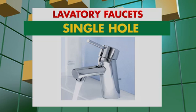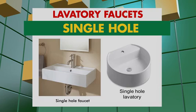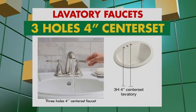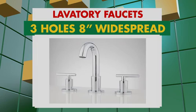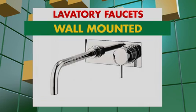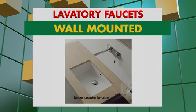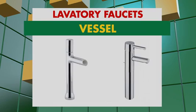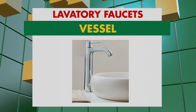Ang single-hole faucets ay ginagamit sa labatory na may isang butas o sa single-hole laboratory. Ang 3-hole 4-inch center set faucets ay ginagamit naman sa labatory na may 3 magkakadikit na butas. Ang 3-hole 8-inch wide-spread faucets ay ginagamit din sa labatory na may 3 magkakahiwalay na butas. Ang wall-mounted faucets ay ginagamit naman sa labatory na walang butas katulad ng undercounter laboratory at vessel-type laboratory. At ang vessel faucets ay mas mataas compared sa standard na laboratory faucets, at ito ay ginagamit naman sa vessel laboratory.